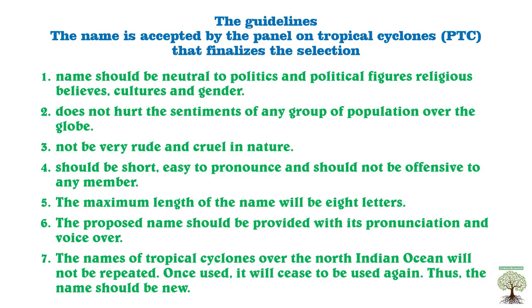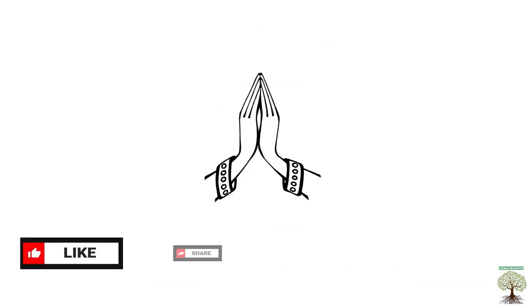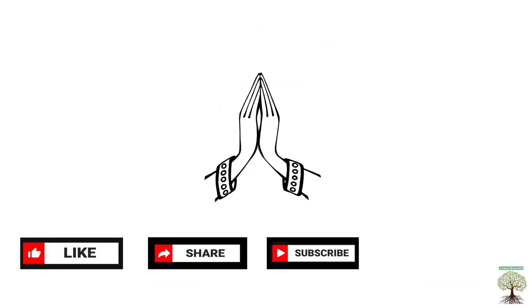Rule 7: The names of tropical cyclones over the North Indian Ocean will not be repeated. Once used, a name ceases to be used again, so each name must be new. Thank you — please like, share, and subscribe to the channel 'Learn to Grow Not to Know.'